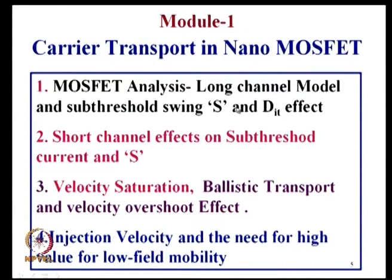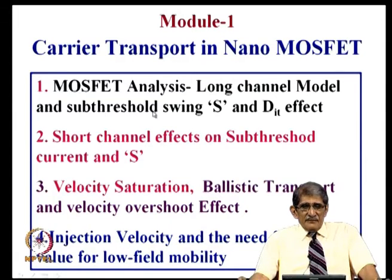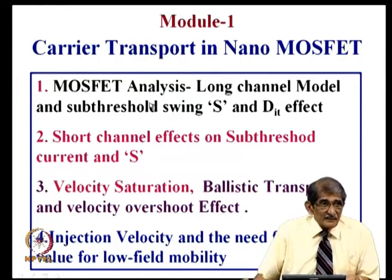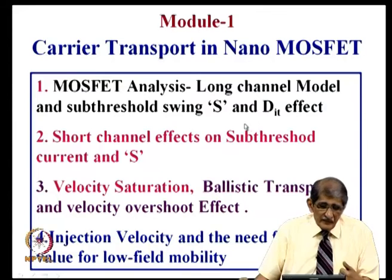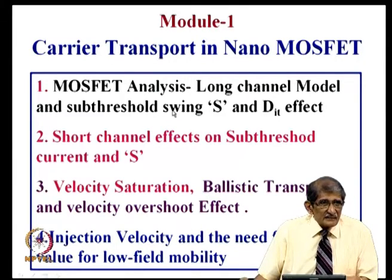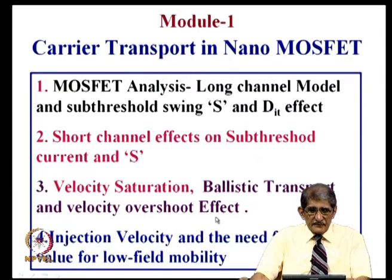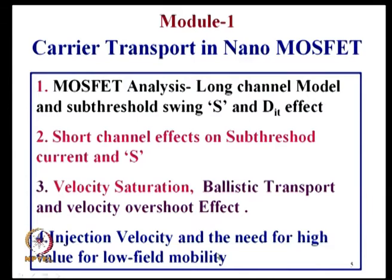Now we take Module 1, which begins with a review to focus on the topic. We cover the conventional MOSFET long-channel model, sub-threshold swing, and the effect of interface state density on sub-threshold swing. The DIT effect on sub-threshold slope was not covered in the previous presentation, though DIT was discussed in detail. Then short channel effects on sub-threshold swing and current, velocity saturation, ballistic transport, velocity overshoot, injection velocity, and the need for high low-field mobility. There is some overlap in this module, but these topics are required for later modules.